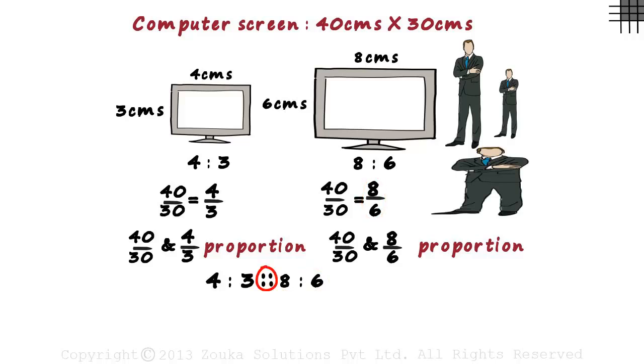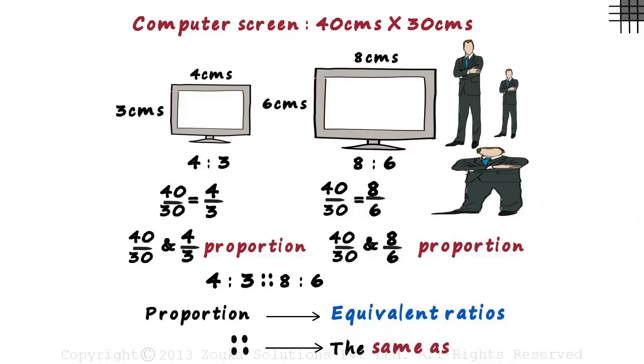And these two colons in between are used to denote equal ratios. It tells us that this ratio is equal to this ratio. Remember proportion simply means equivalent ratios, and this symbol means the same as or equal to. So this can be read as 4 is to 3 is the same as 8 is to 6.